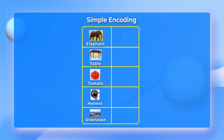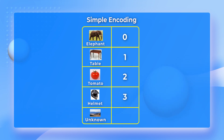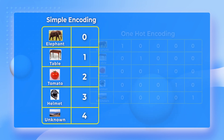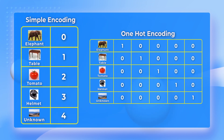Why do we need one-hot encoding? Why don't we encode these labels using a single number? For example, we could represent the elephant class using the number 0, table using 1, tomato using the number 2, helmet using 3, and unknown could be the number 4. Why use a vector in one-hot encoding when this simple encoding requires only a single number?